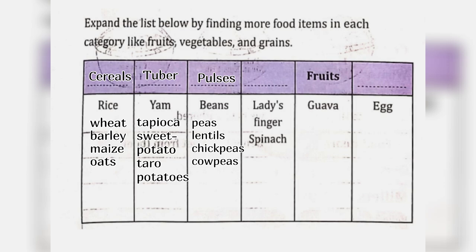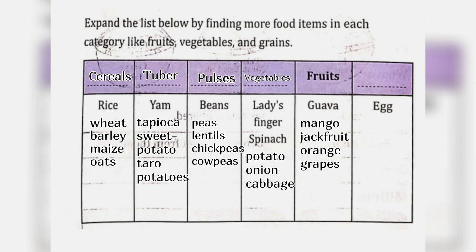Next is vegetables. Under vegetables we can write: Lady's finger, spinach, potato, onion, cabbage. Next is fruits. Under fruits we can write: Guava, mango, jackfruit, orange, grapes. Next will be dairy and poultry. Under dairy and poultry we can write: Egg, milk, meat, fish.